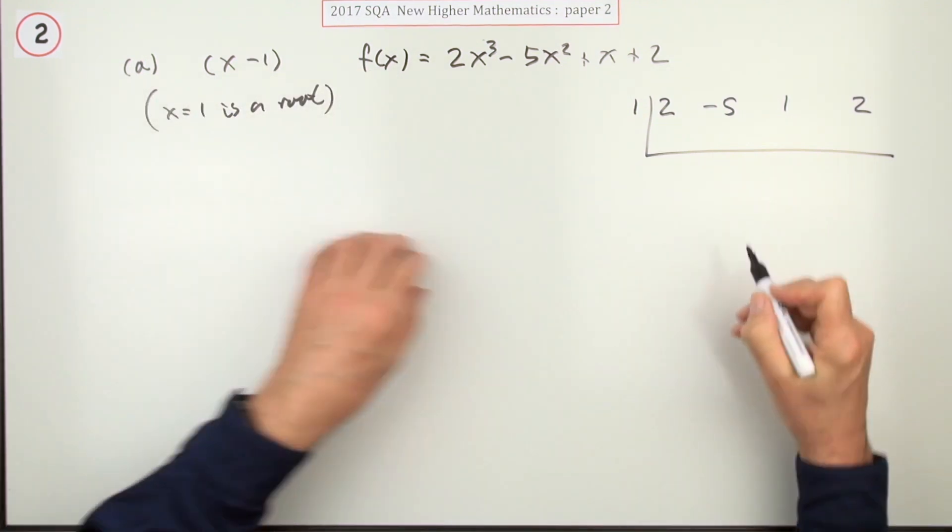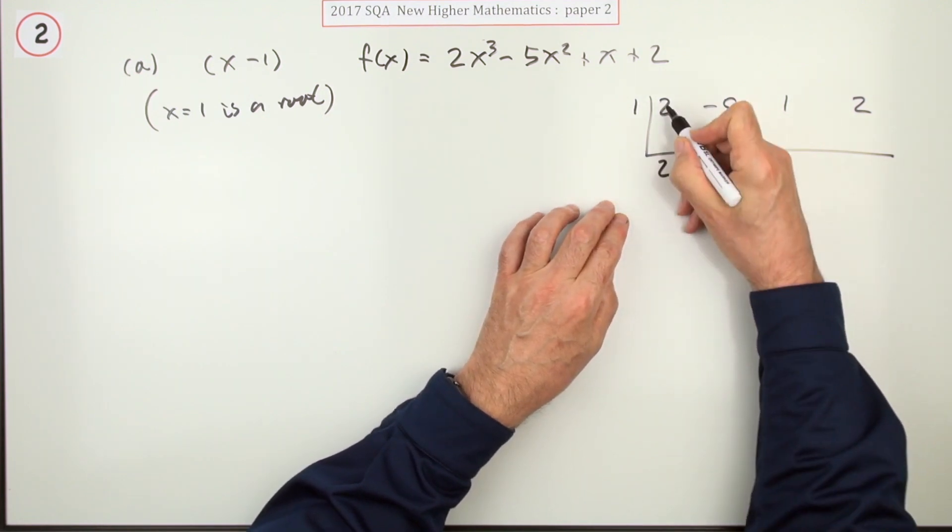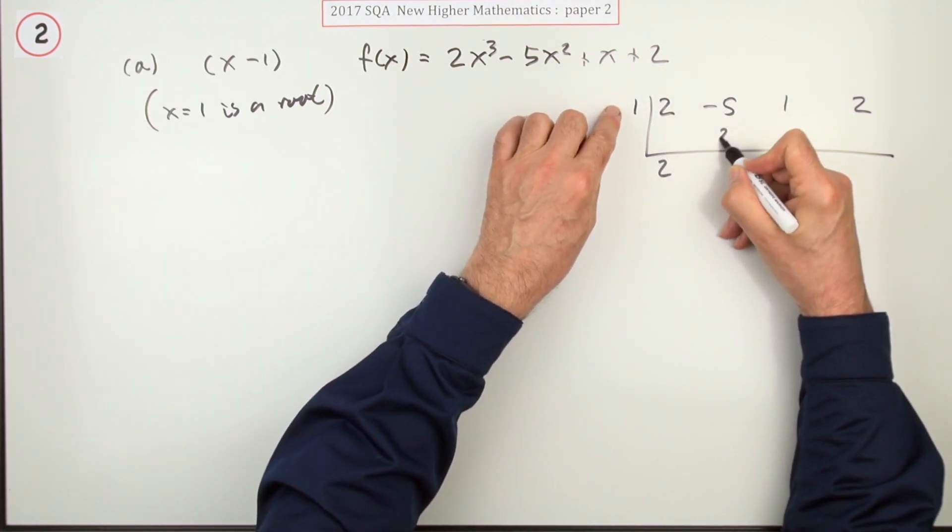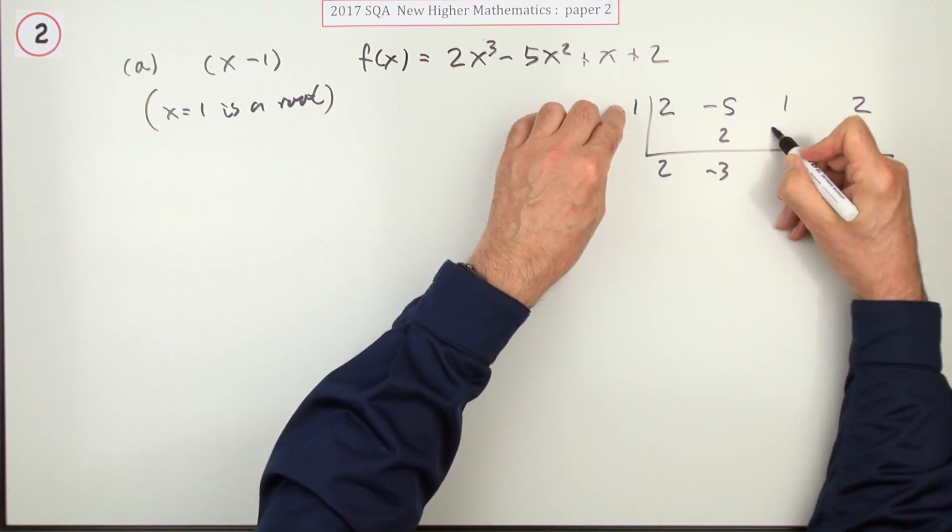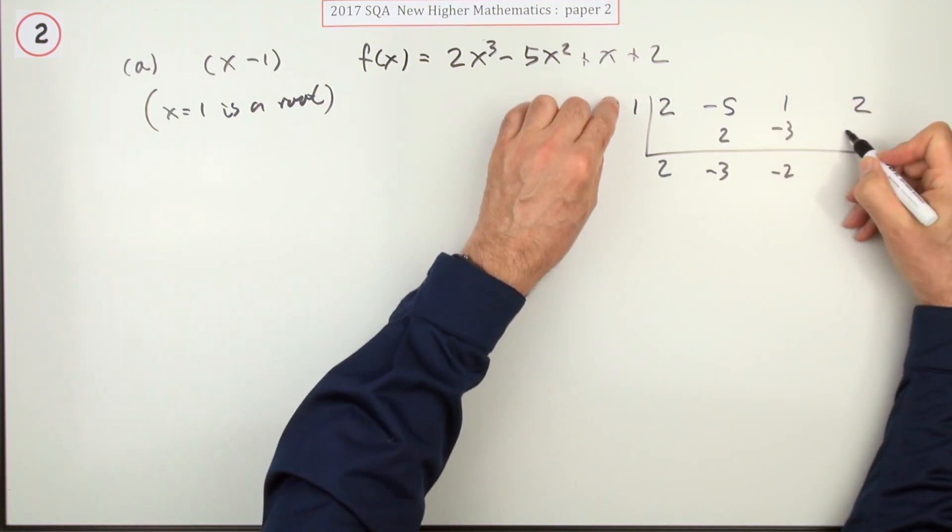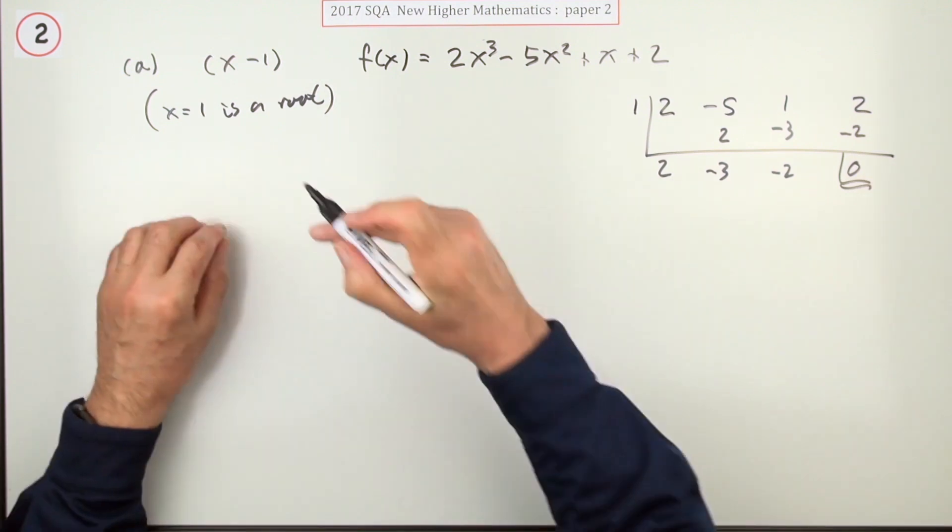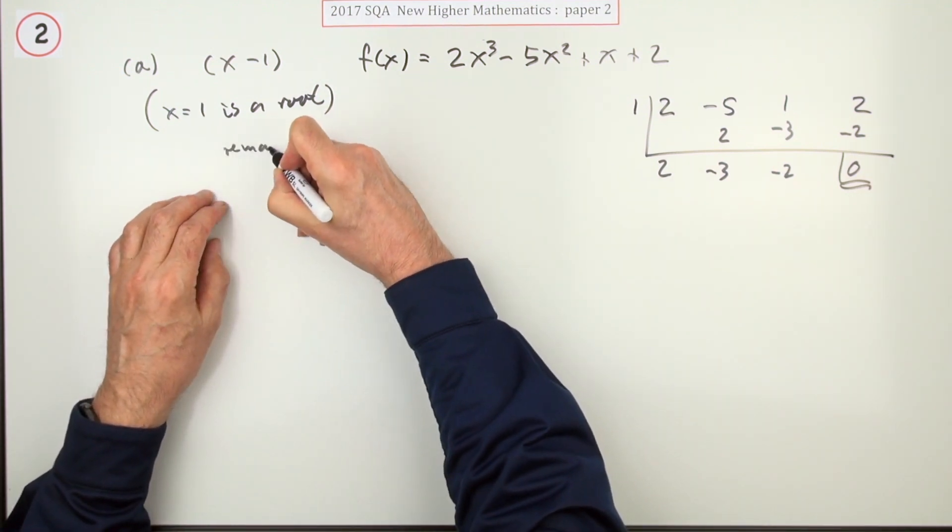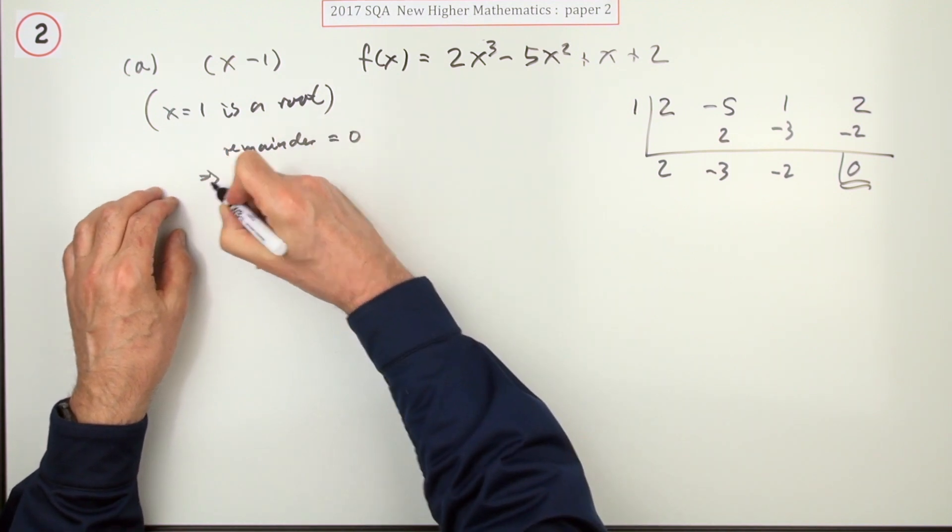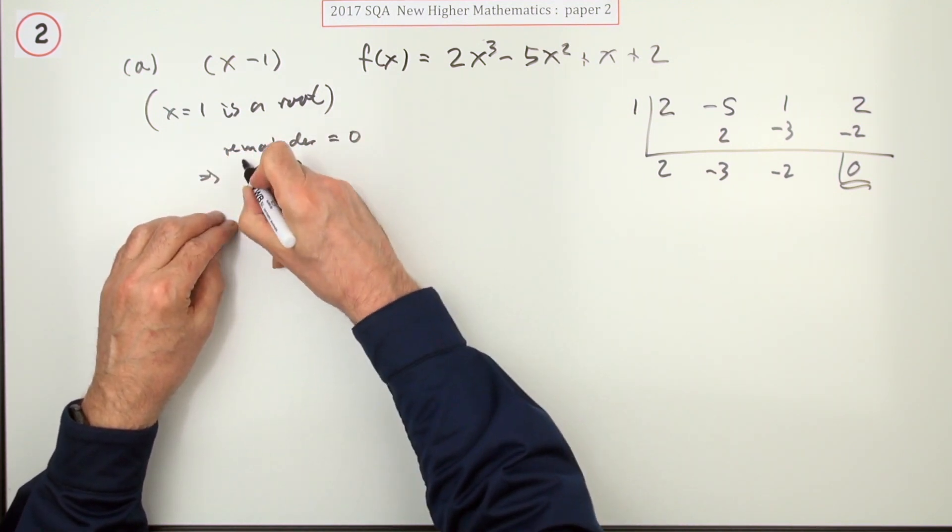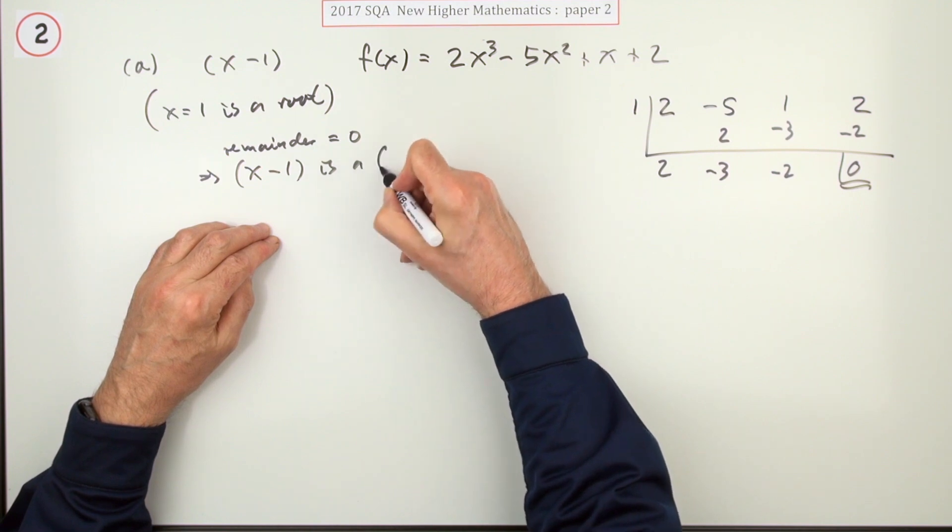We'll just put a wee note down. So feeding it through the synthetic division: add down, multiply up, add down, multiply up, add down, multiply up, add down, and you get zero. But justify it, so you would say the remainder equals zero, which means x minus one is a factor.